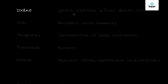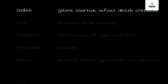Now let's look at iodine. Iodine is a component of thyroid hormone. The deficiency of iodine causes goiter, abortion, infant death, and cretinism.